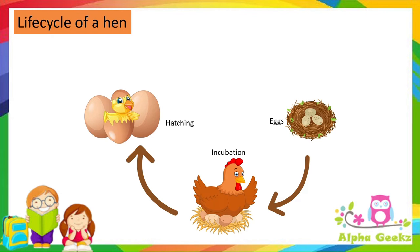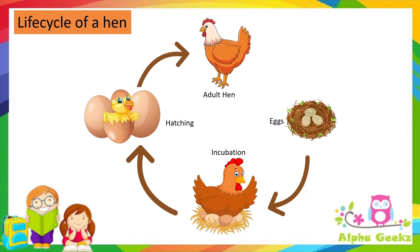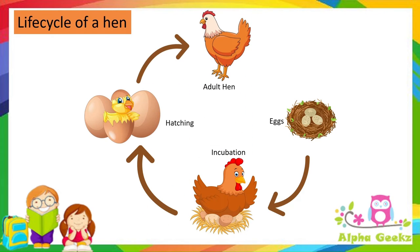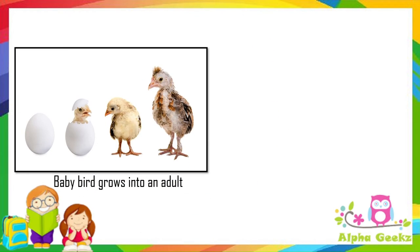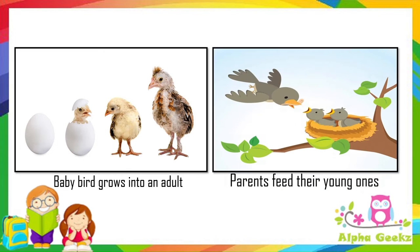The baby bird grows into an adult hen and the process continues — this is the life cycle of a hen. Until they grow into adults, the parents feed the young ones.